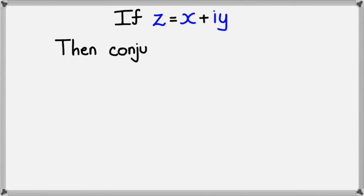then the conjugate of z will be written with this format here, with a little line on top of z to say that it's a conjugate.